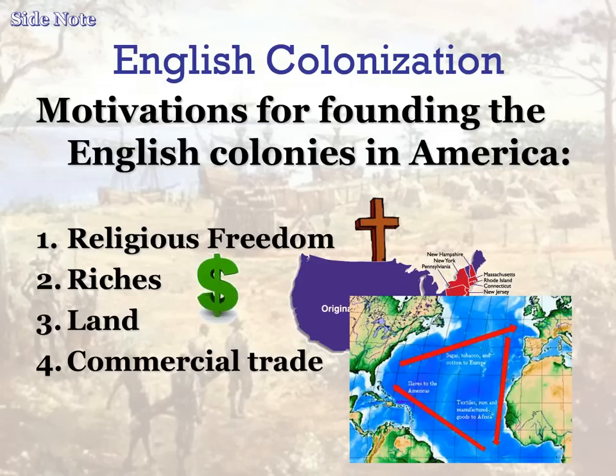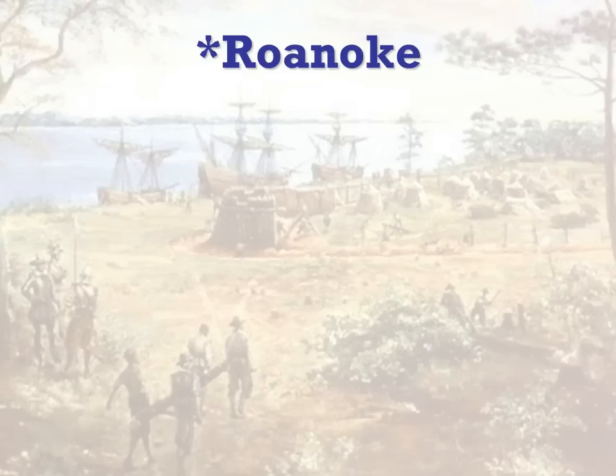Now, how they went about colonizing has a couple of different forms. We'll talk about this in a later lecture dealing with the different types of colonies — proprietary, charter, or royal colony. But to begin our story, we start with the late 1500s, when at a place called Roanoke, just off the coast of present-day North Carolina.